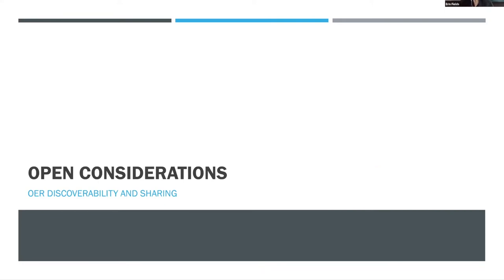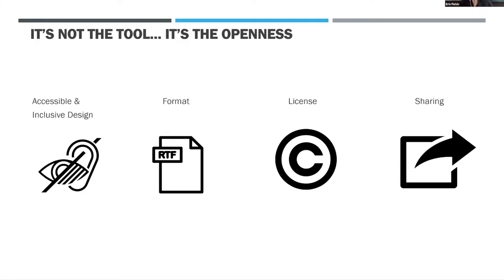When we talk about making something discoverable and sharing it, the question people usually ask in open education resource workshops is: what tool should I use to create my resource? While that question about tools is important — different tools have different affordances — openness is not necessarily where you create an object, but how it has been created. True openness depends more than just creation; it depends on accessibility, inclusivity, format, licensing, and where it's been shared. We often forget those first three and skip to how to get it out there.